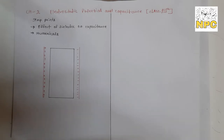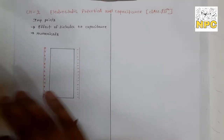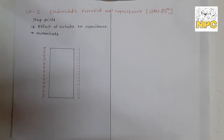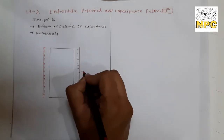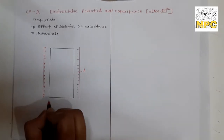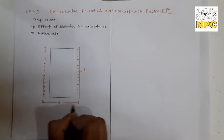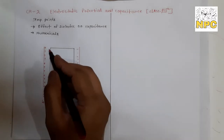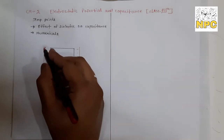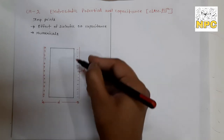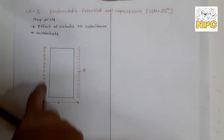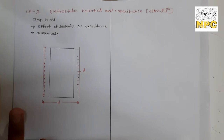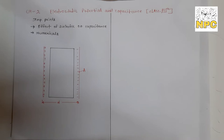Stay tuned. First of all, let's recall what we studied about the parallel plate capacitor. We have two plates with area A and distance between the plates D. The charges on the positive plate are positive charges and on the negative plate are negative charges. The net charge on the positive plate is +Q.